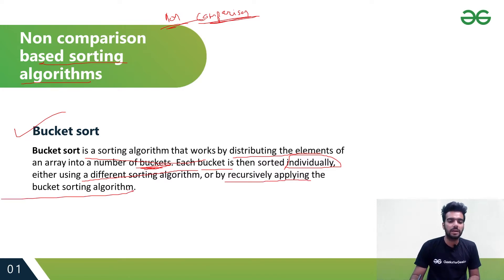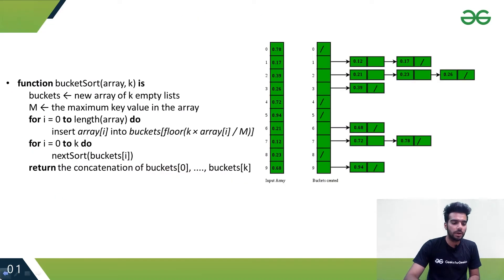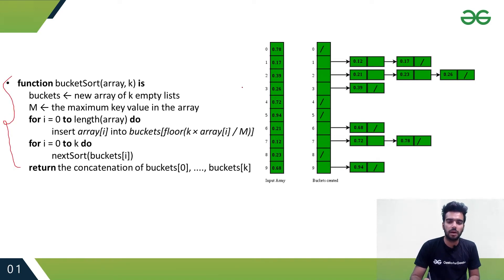Let's see an example of how the bucket sort algorithm works. This is the algorithm written for bucket sort, but let me explain it in the simplest way by taking an example. Let's say an input array is given, and we have to sort these elements into sorted order.